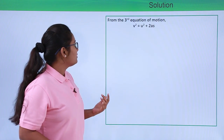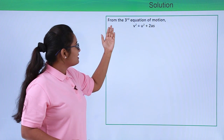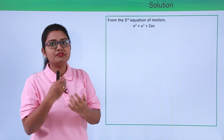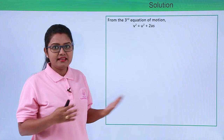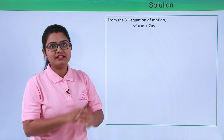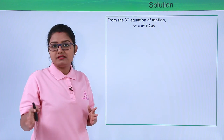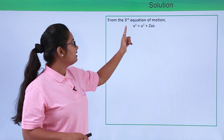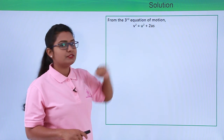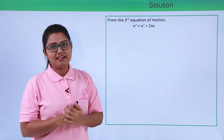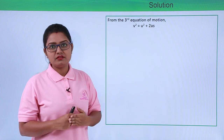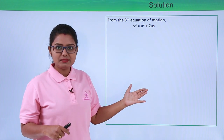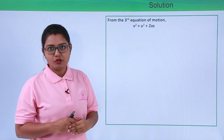Now let us solve the problem. We need to find the acceleration — or rather the deceleration, the negative acceleration — of the car due to the brakes. We can calculate this using the third equation of motion: v² = u² + 2as, where v is the final velocity, u is the initial velocity, a is the acceleration, and s is the displacement before the car comes to a stop.